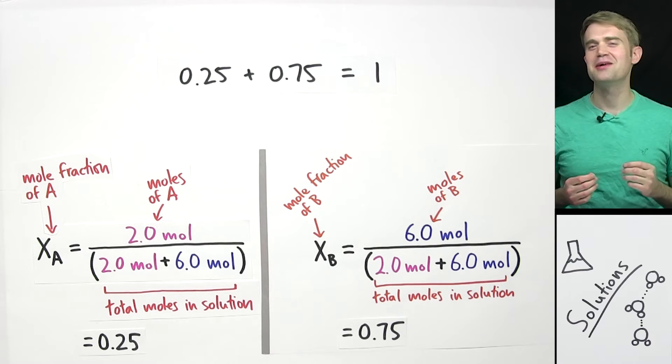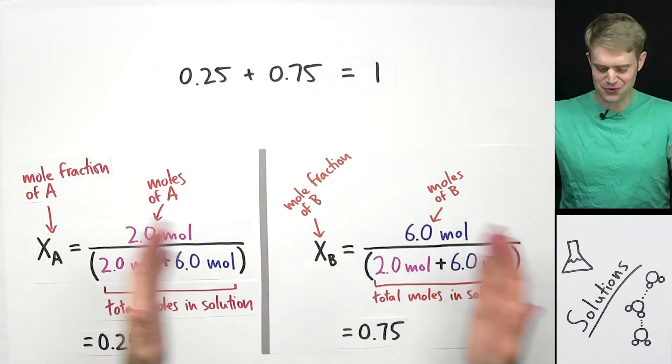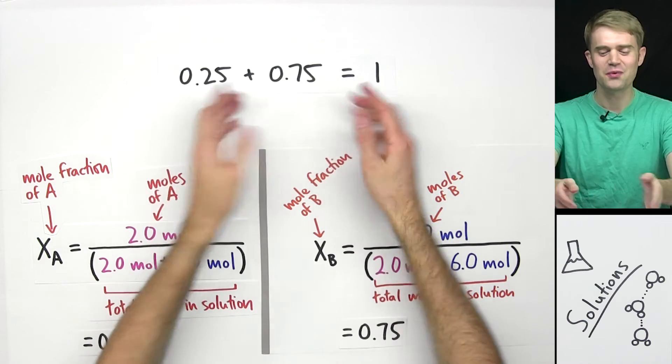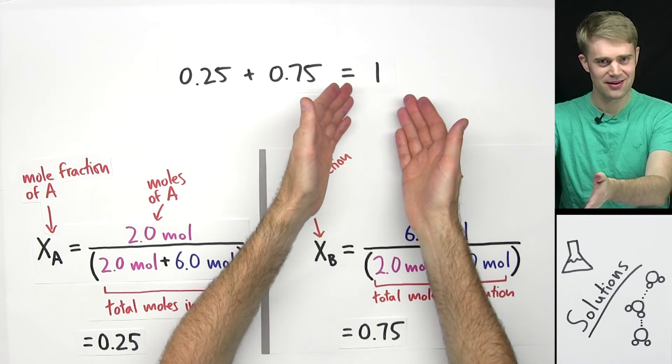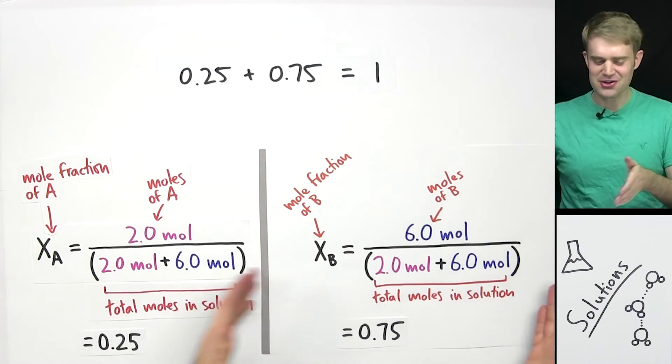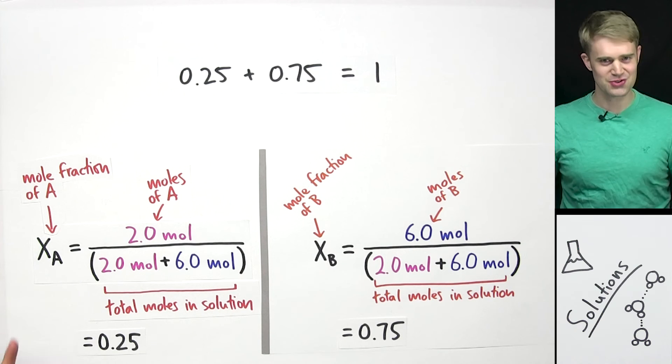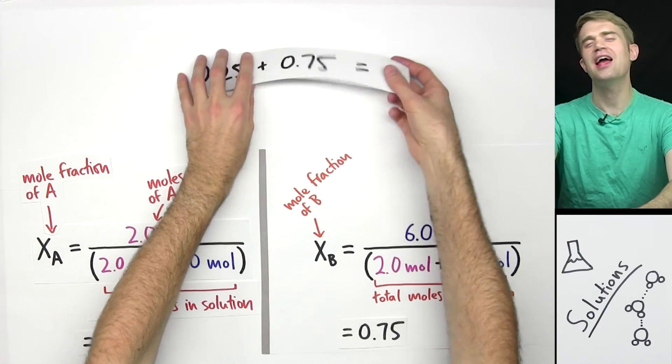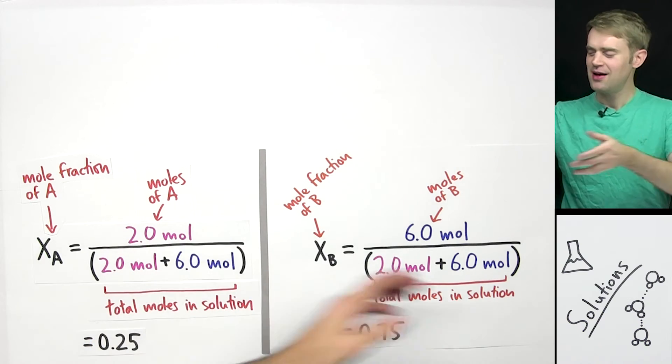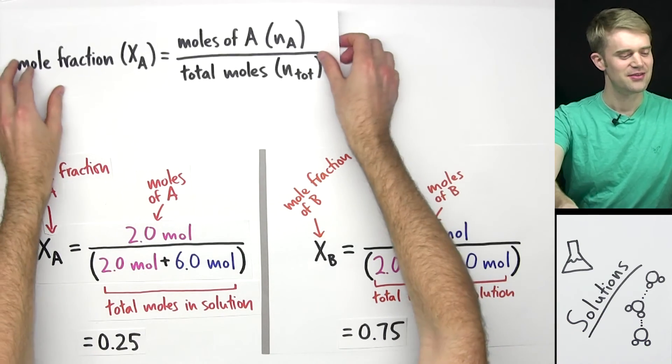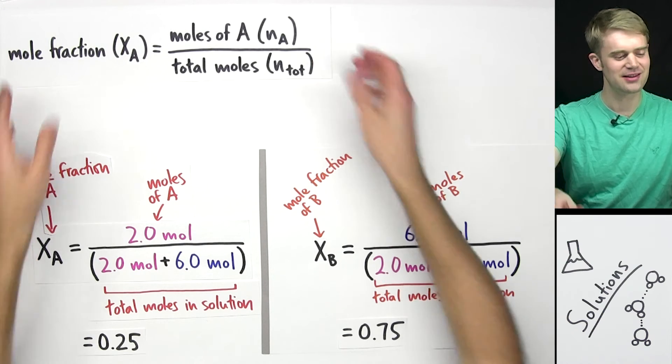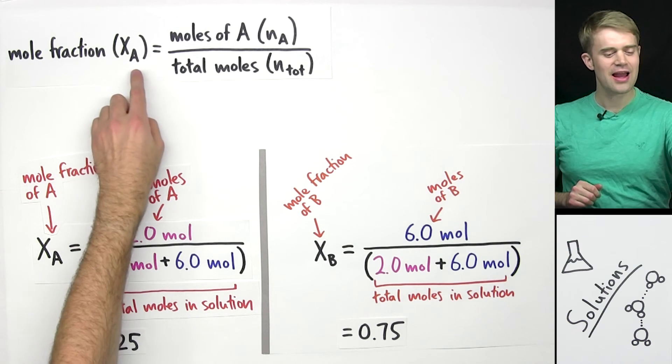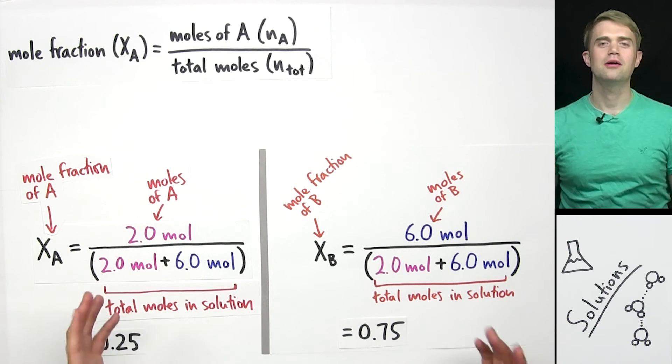Here's something else to keep in mind about mole fraction. Since these two mole fractions represent the two parts of the solution, when we add them together we get one or the whole. So these are two examples of how we can calculate mole fraction for different components of a solution. But how can we write a general equation that we can refer to whenever we need to calculate mole fraction?